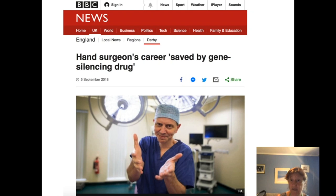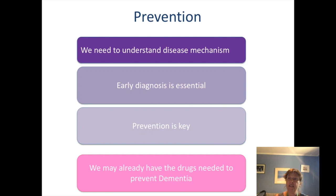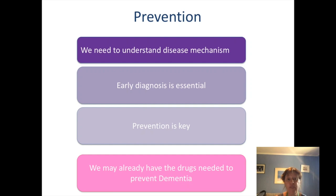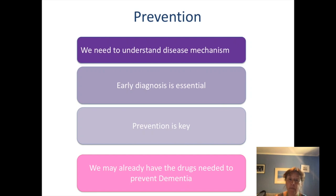When thinking about how we treat Alzheimer's disease, we really need to understand the disease mechanism — it's no good making a drug that we don't understand how it works. Most importantly, it is essential to get early diagnosis, because we know that quite a bit of damage has been done when people start to show real symptoms of memory loss. If we could diagnose people before they start to show symptoms, it would be possible to treat them early — prevention is key rather than cure. On a very positive note, as Bart Struper from the Dementia Research Institute has said, we may already have the drugs needed to prevent dementia; the problem is that we haven't been able to treat people early enough to see if those will work.